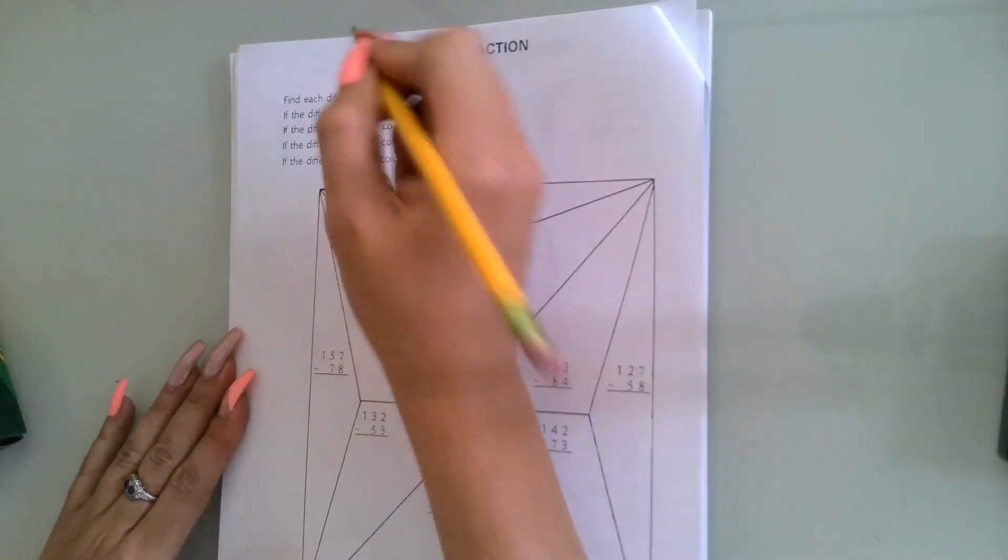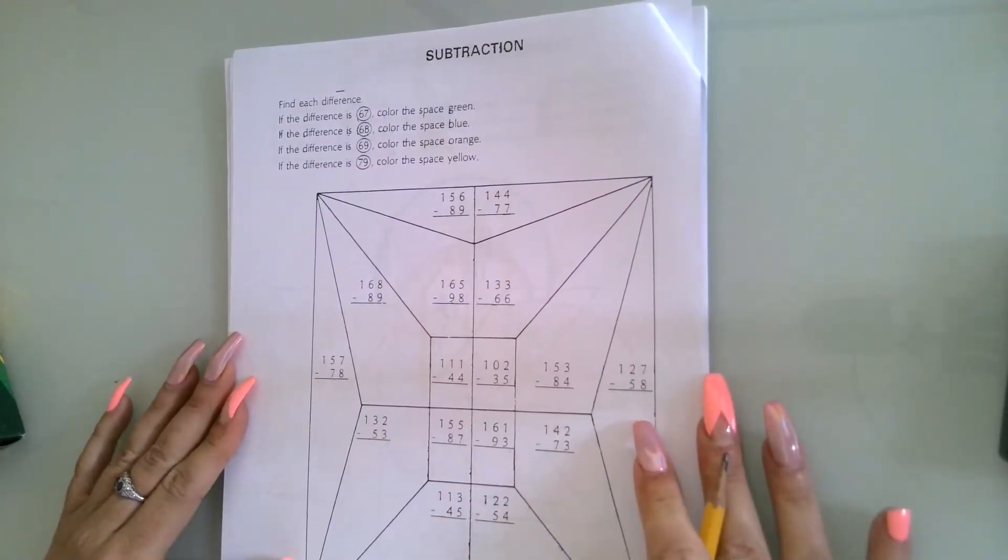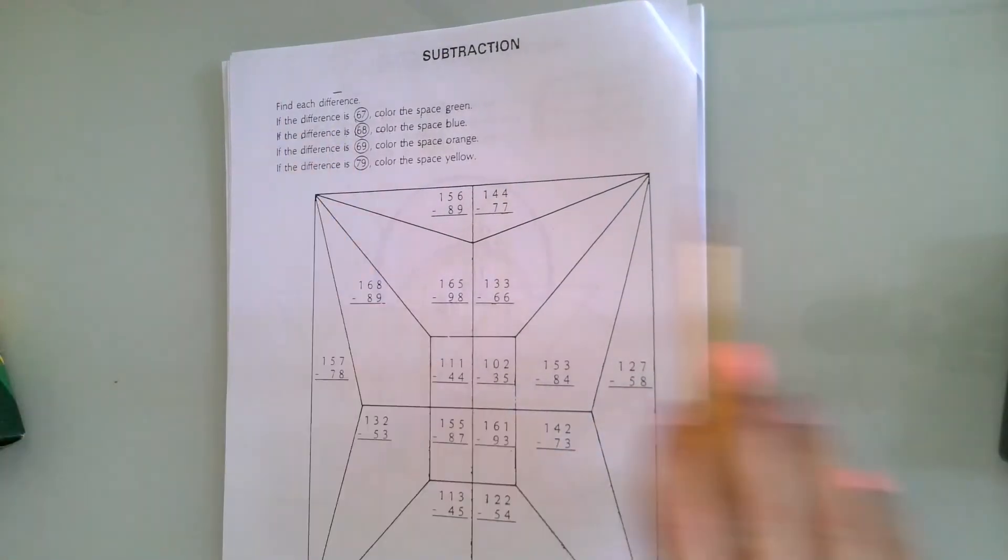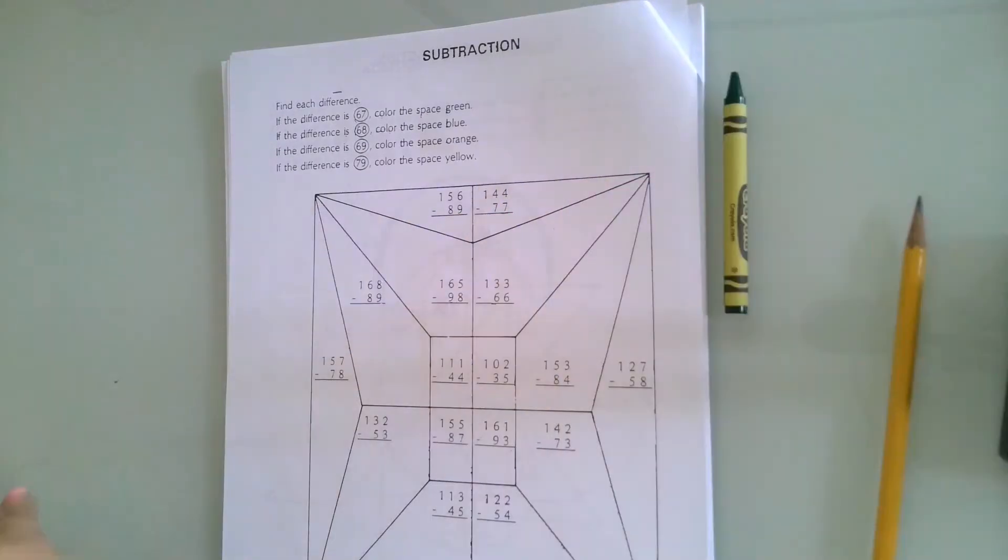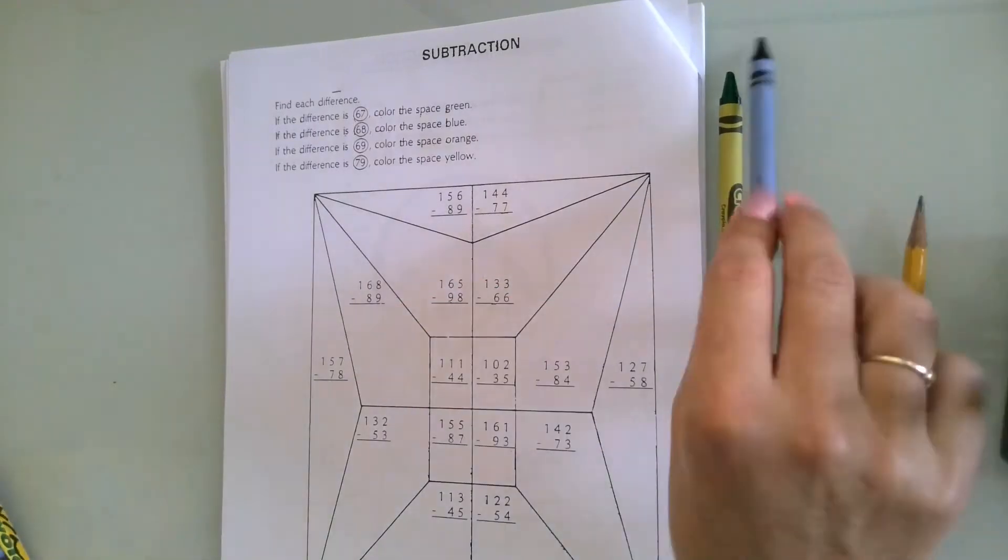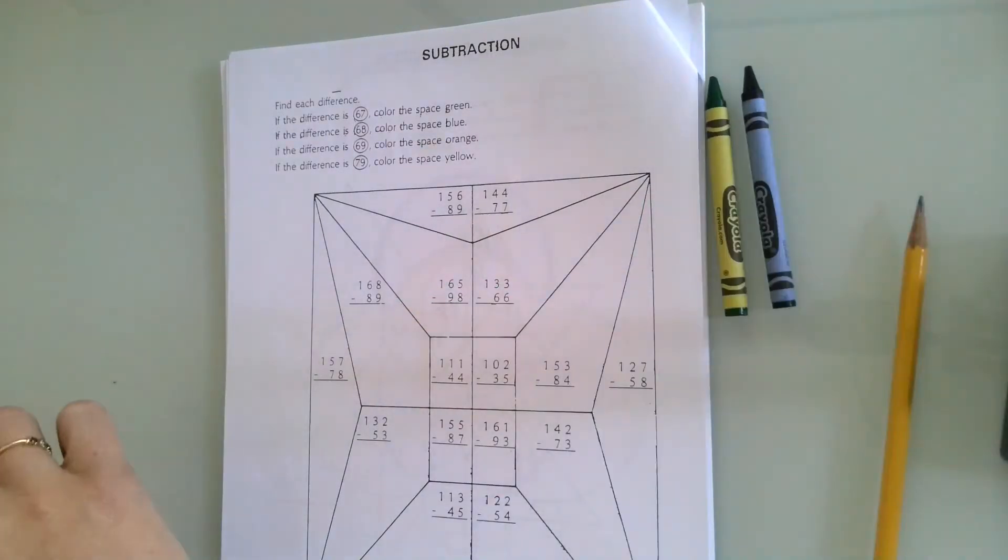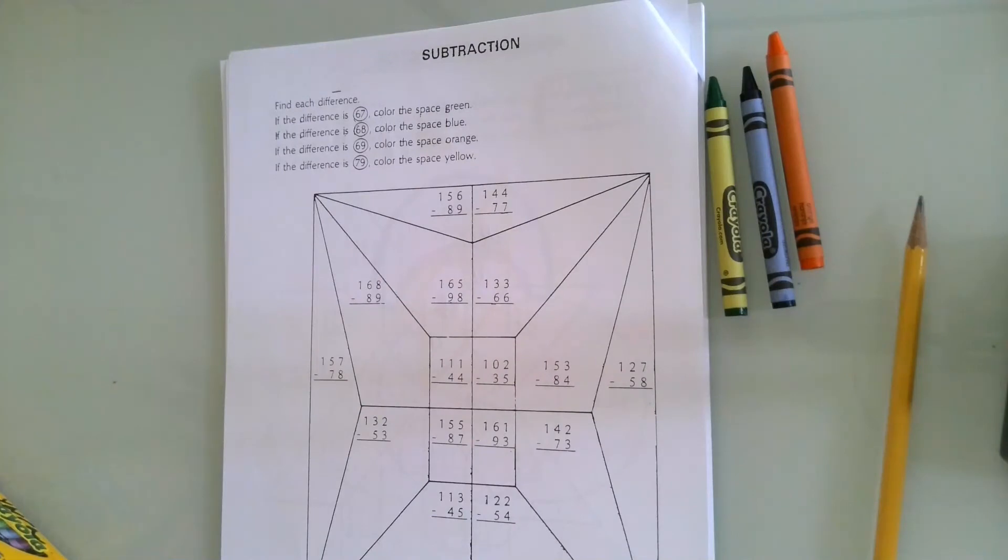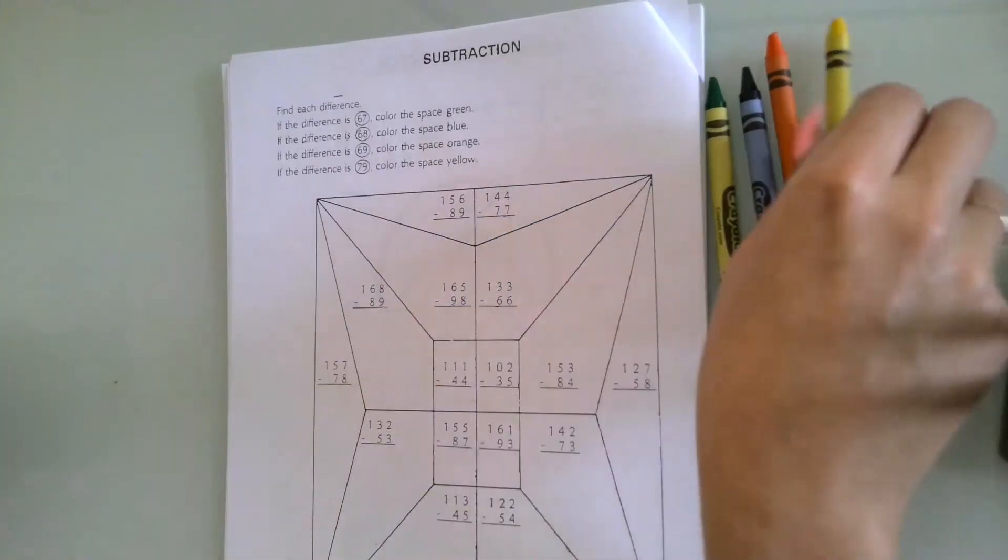We know that difference means the answer to a subtraction problem. It says if difference is 67, color the space green. If the difference is 8, color the space blue. If the difference is 69, color the space orange. And the last one says if the difference is 79, color the space yellow. I'm going to work out two problems for you.